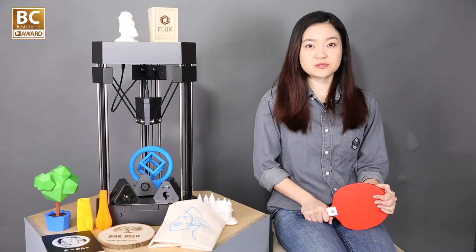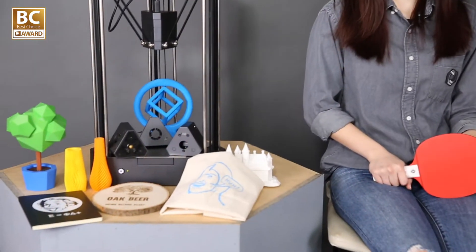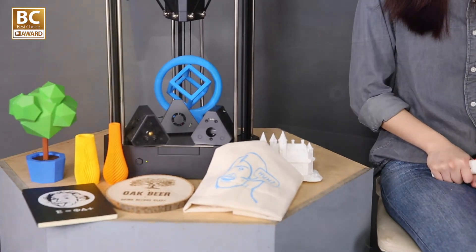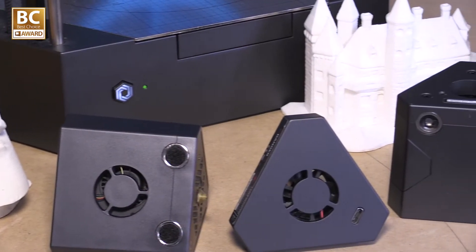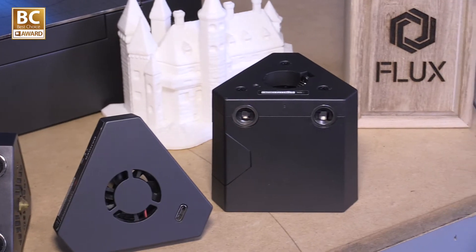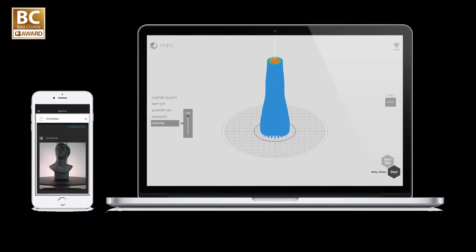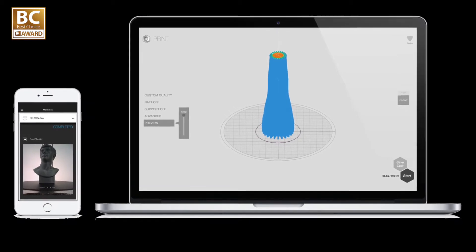Flux Delta Plus is a multifunctional 3D printer. You can do 3D printing, laser engraving, drawing, and vinyl cutting. It also comes with software and a mobile app, so you can monitor your machine even when you're away on your phone.